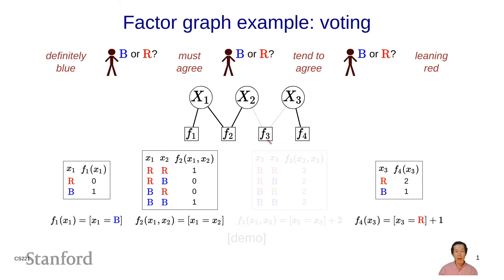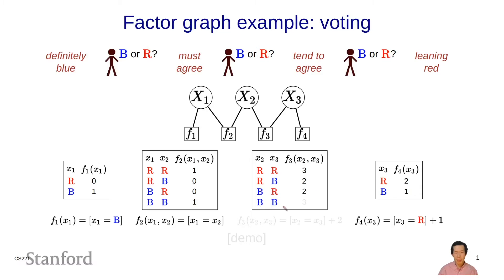Finally, f3 captures whether x2 and x3 tend to agree. The table for x2 and x3 looks like this: if they're both r, I return 3; if they're different, I return 2; and if they're both b, I return 3. Mathematically, f3 is an indicator function of x2 equals x3 plus a smoothing factor of 2, which gives 3, 2, 2, 3 — a mild preference for these two people to agree compared to not agree.